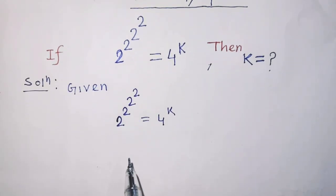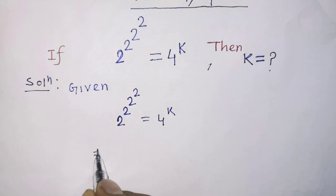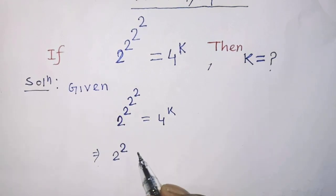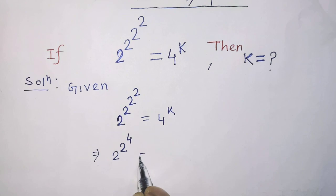In first step of the solution, it will be 2 power 2 power 4 is equal to on the right hand side again have to write 4 to the power k.